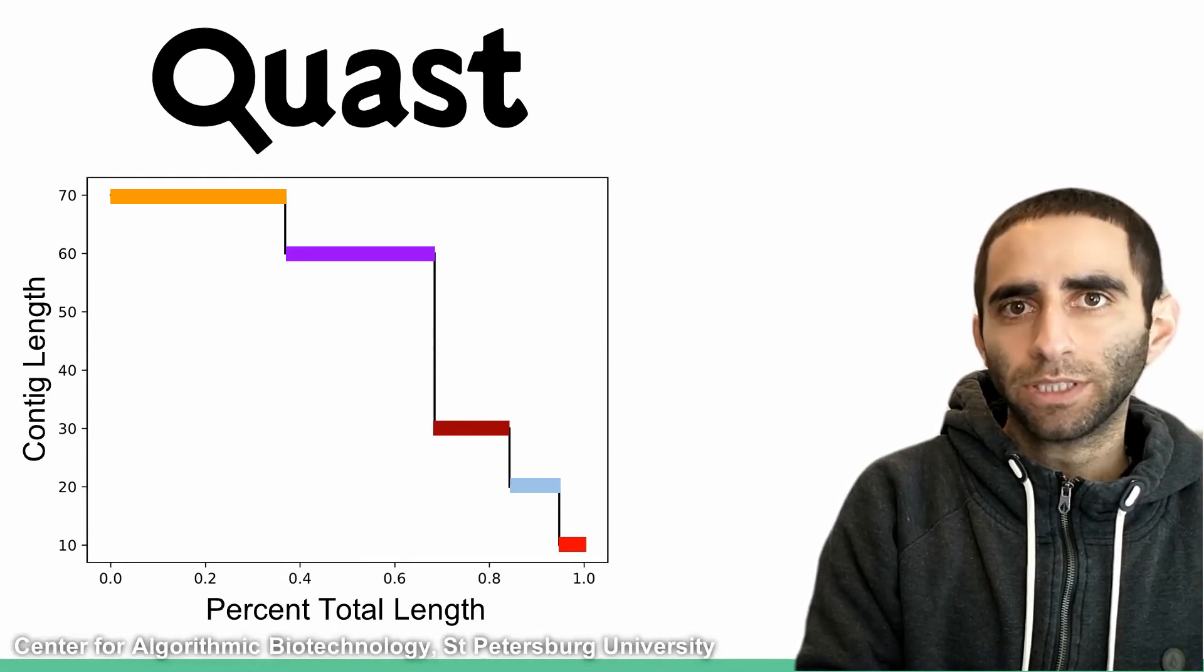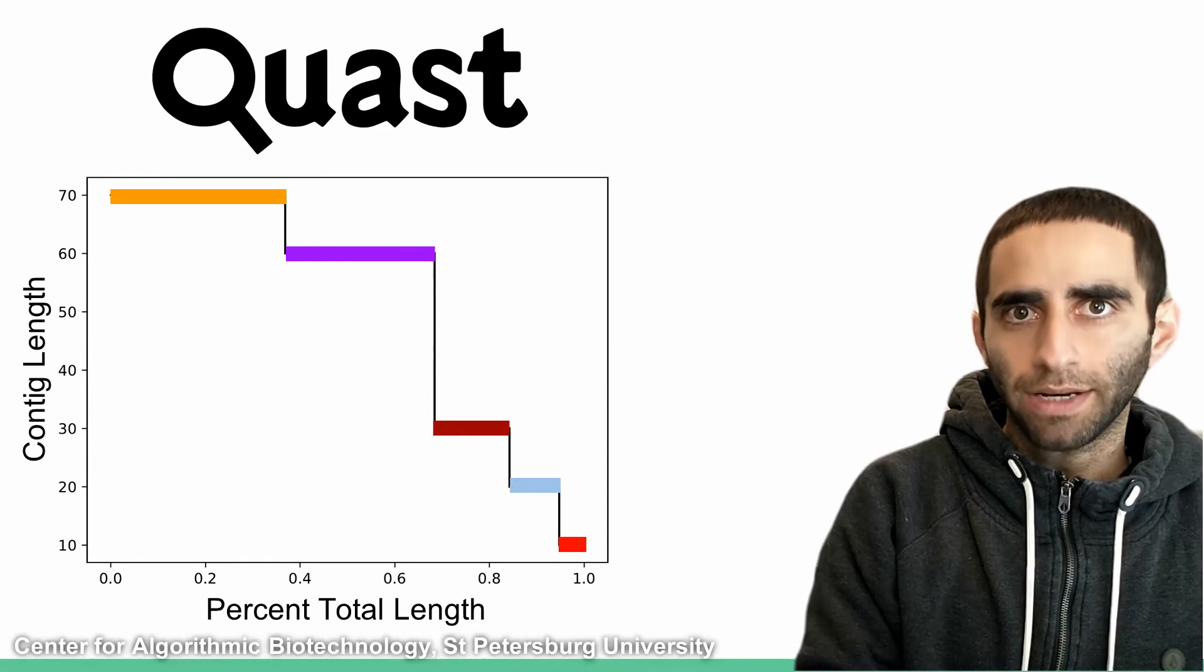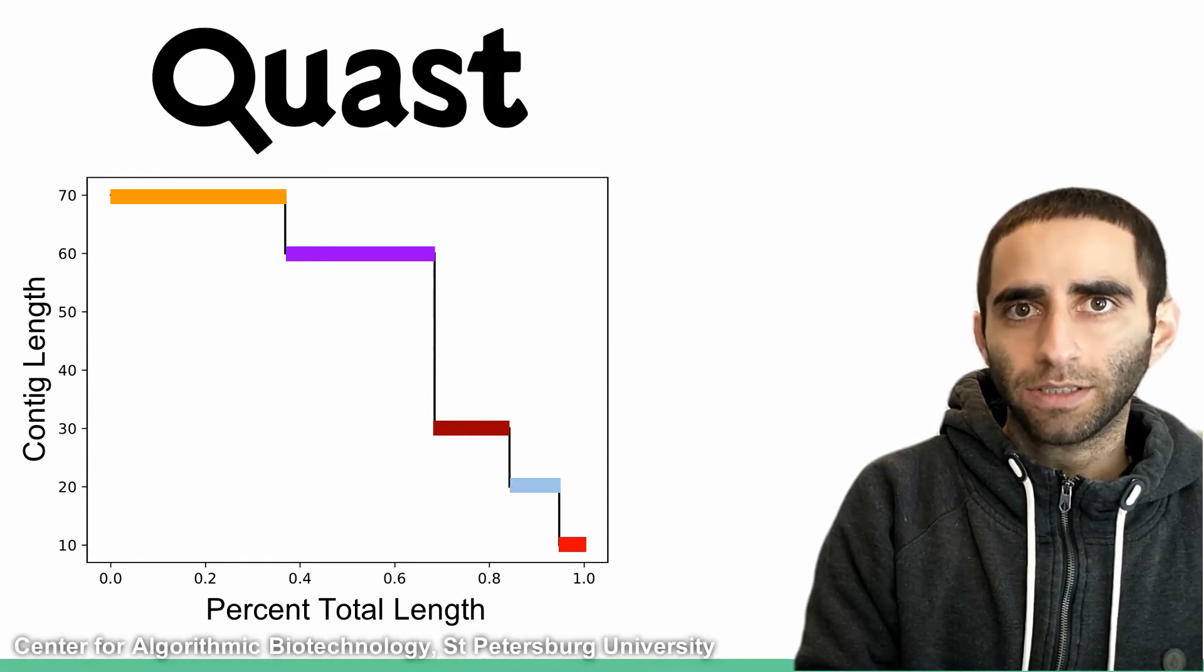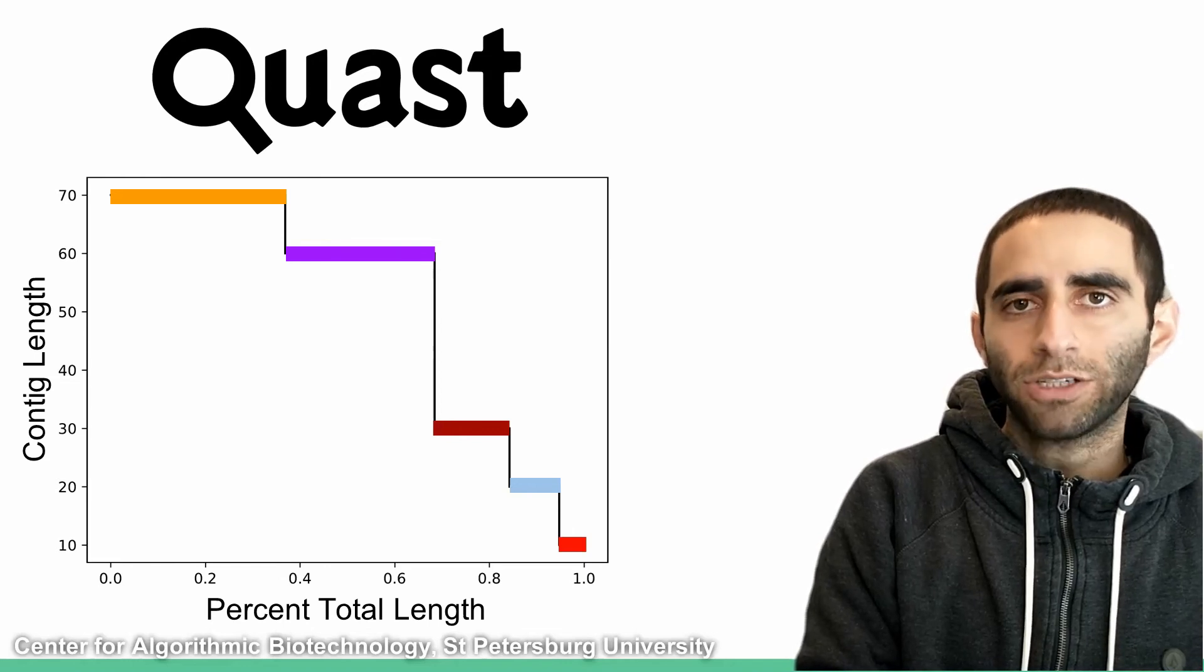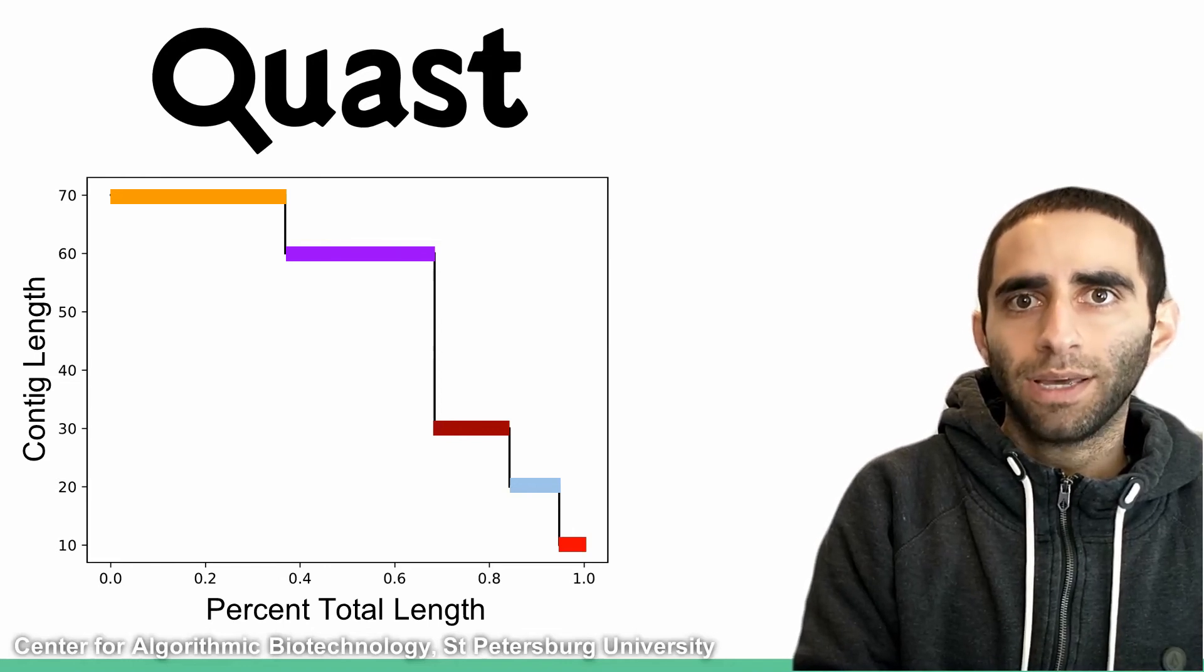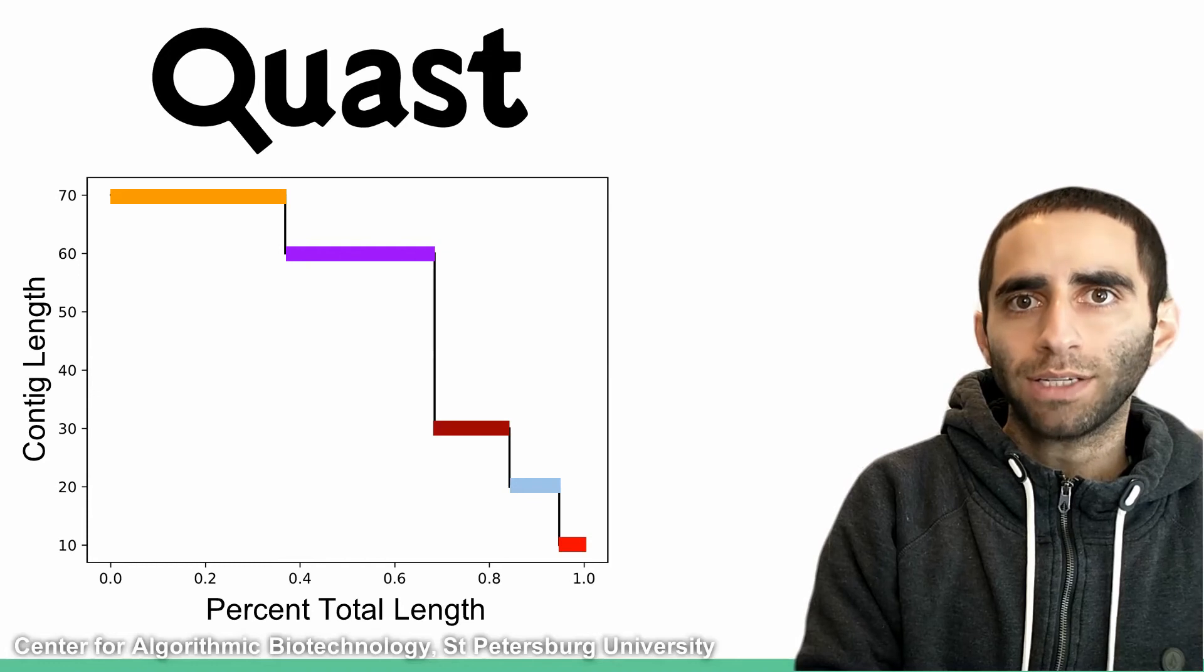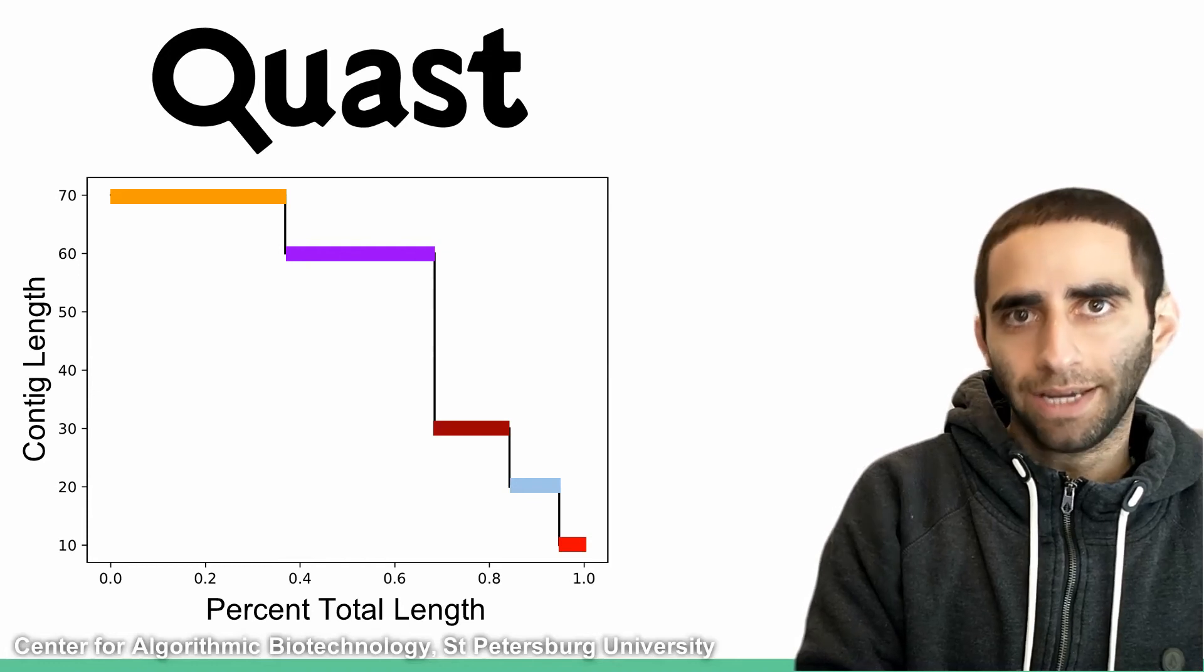Again, I've ordered the contigs in decreasing order of length from left to right. The vertical axis depicts the length of the contig, and the width of each horizontal line segment is the proportion of the total contig length that this contig takes up.